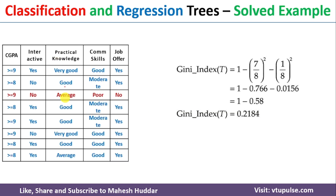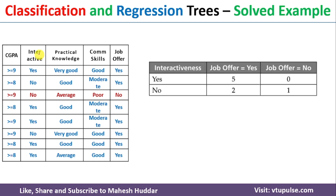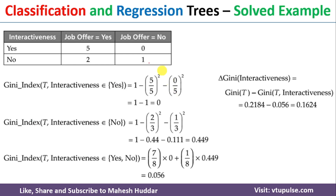From these 8 examples, the Gini index of this subset equals 0.2184. We now calculate the best splitting attribute among Interactiveness, Practical Knowledge, and Communication Skill for this subset. For Interactiveness, there are two possibilities — Yes and No. The Gini index of this combination equals 0.056, and Gini(Interactiveness) = 0.2184 − 0.056 = 0.1624.